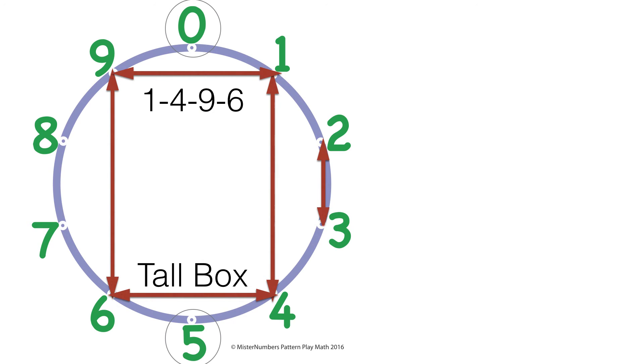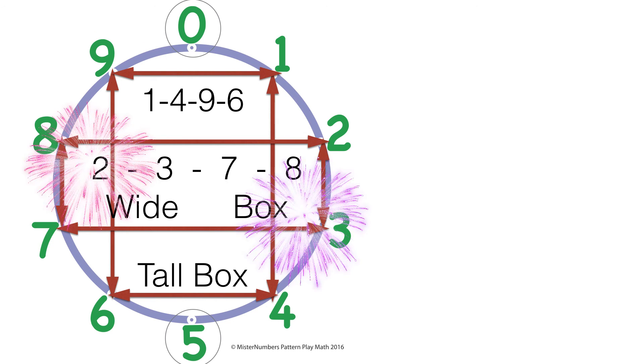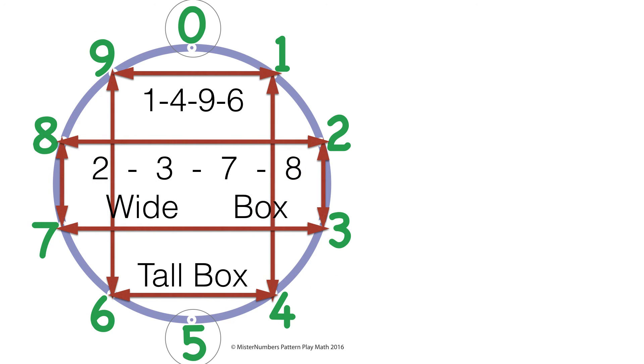And the bottom and top add up to 10 and the sides add up to 5 or 15. And then outside that are 2, 3, 7 and 8. And those are the wide box. And those, the top and bottom of that box add up to 10 and the sides add up to 5 or 15 too.